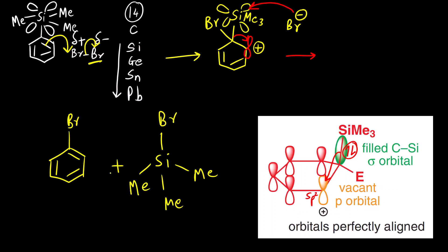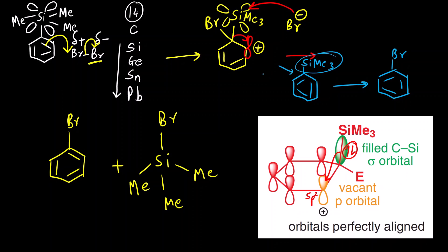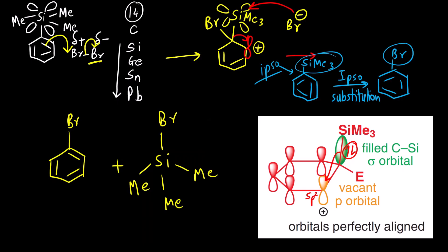Now if I write down the overall reaction, it will be very clear that the product is bromobenzene. You can see the SiMe3 group at the ipso position is substituted by Br — this is called ipso substitution. Ipso is the Latin word meaning 'itself.' So the correct answer is Option 1. The carbocation is stable because the orbital containing the electrons of the carbon-silicon bond is perfectly aligned with the vacant p orbital — that is the reason for stability. The correct answer is Option 1. Thank you.